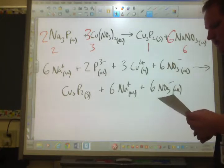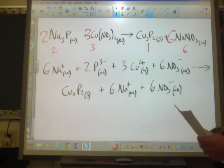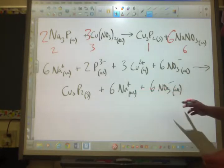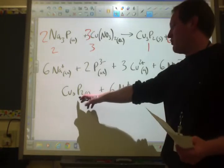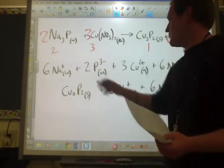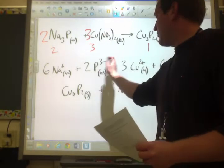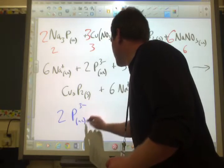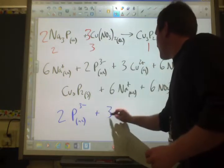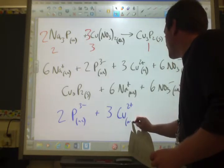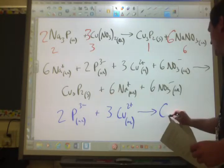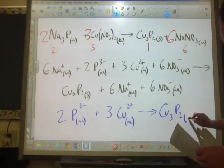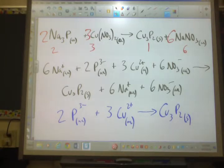For the net ionic equation, you're going to find anything that is repeated, and you're going to get rid of it. Or just a simple way to do this, you've probably noticed this on the precipitate lab, anything that's still aqueous at the end, you're going to get rid of it. So we form copper(II) phosphide, but these are still aqueous. So we're going to rewrite this as, again, keep the same charges and coefficients. Two phosphate ions P3-(aq) plus three copper 2+ ions Cu2+(aq) yield copper three phosphide solid Cu3P2(s). Again, the numbers have to balance out. Two phosphorus ions, three copper ions, Cu3P2.